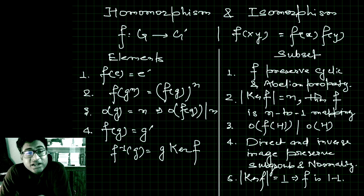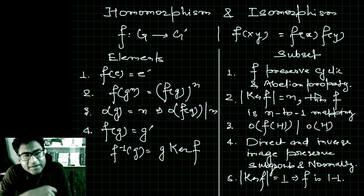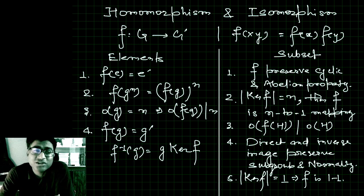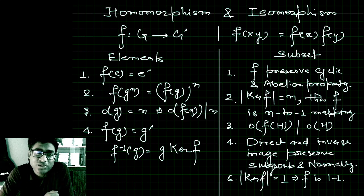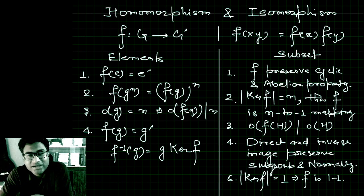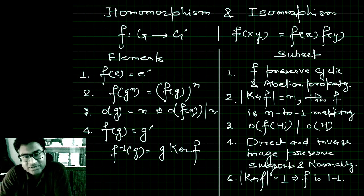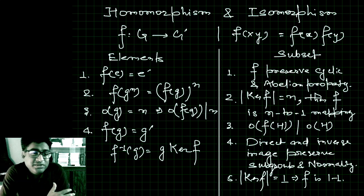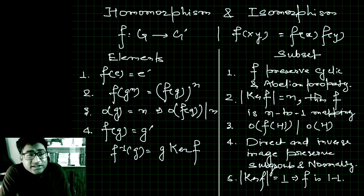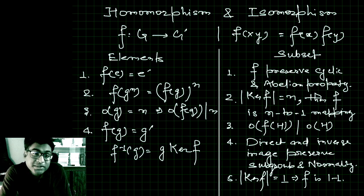The next property: if you take any element in group G prime and want to find its inverse image, you find one image and take the coset with the kernel of the homomorphism. This is why when solving a system of linear equations Ax = b, we find a particular solution and add all solutions of the homogeneous system Ax = 0. This is due to this result — we find a particular solution and take the coset with the kernel — because matrices are homomorphisms. The set Ax = 0 is actually the kernel of the map induced by matrix A on the vector space R^n.